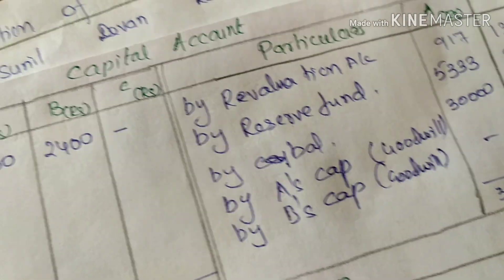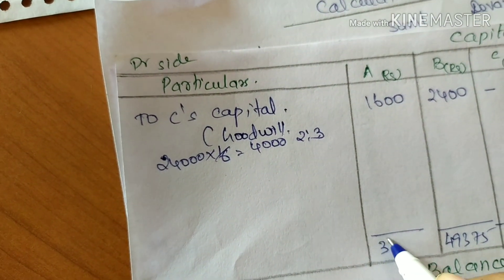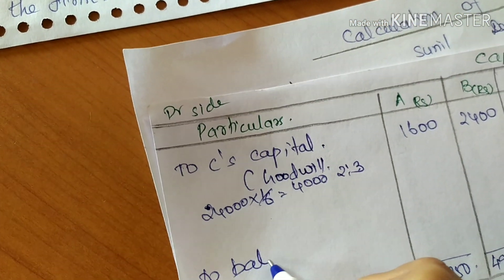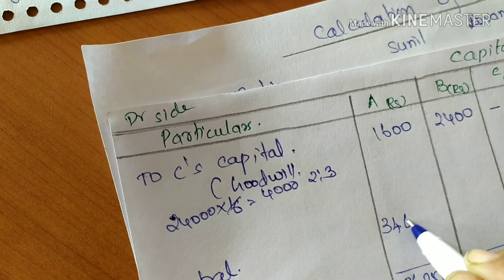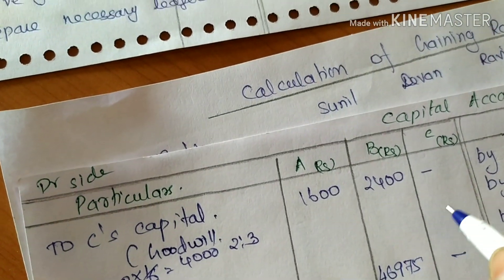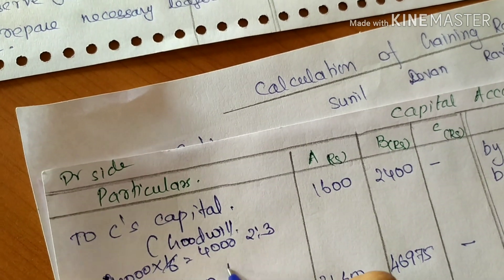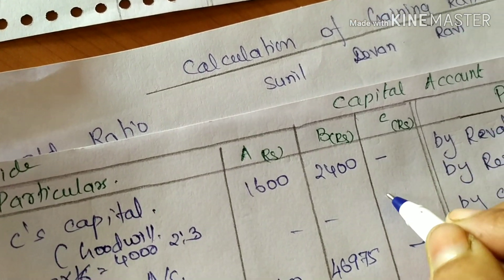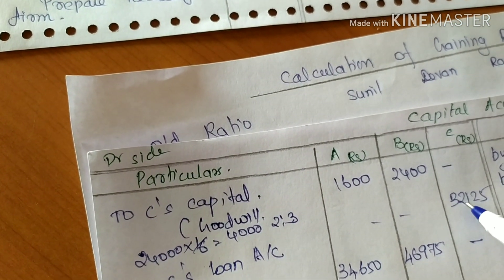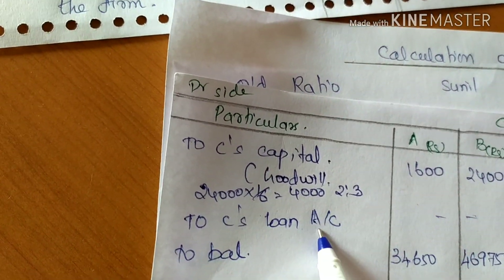After all adjustments, A's capital balance is approximately 34,065 and B's capital balance is 46,975. C's remaining balance of 30,125 is transferred to C's loan account, since the full amount cannot be paid immediately by the continuing partnership of A and B.